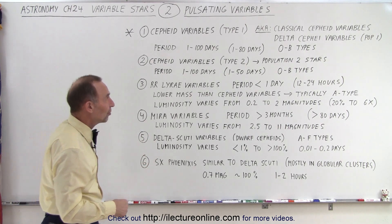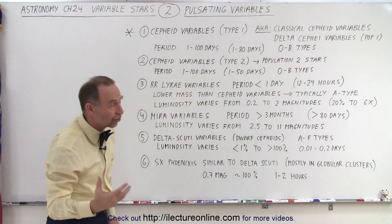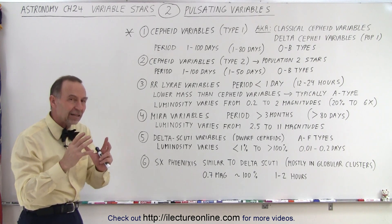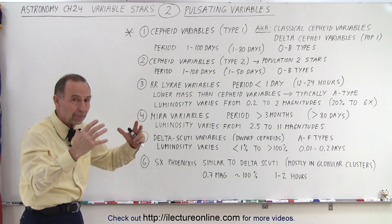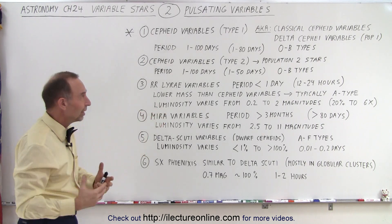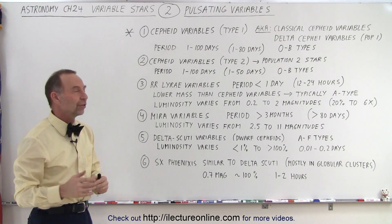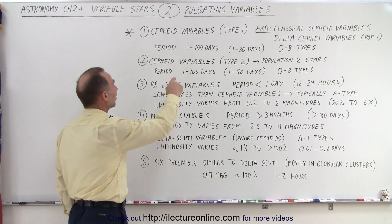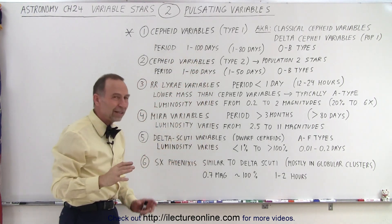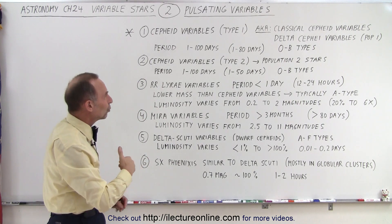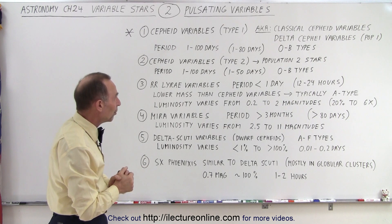The Cepheid variables — these are the OB-type stars, so they're the very large red giants, the super red giants. When they get near the end of their life cycle as a red giant, they begin to vary in brightness, pulsating both in radius and in temperature, causing the luminosity to vary over time. The period of Cepheid variables is typically from 1 to 80 days. Once you get over 80 days, they turn into a different kind of variable.